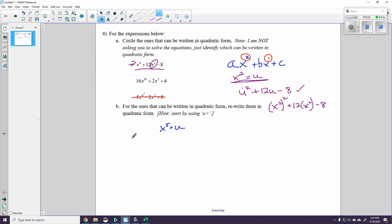So then I'm going to get 16u squared plus 2u plus 6. And that's a perfectly legitimate answer. But to make it even a little bit nicer, I would say that 16 is 4 squared. So I would go 4u squared plus 2u plus 6.